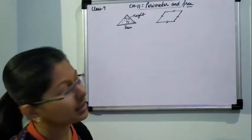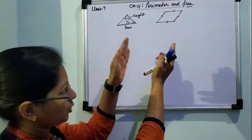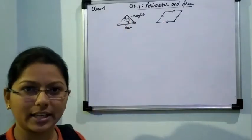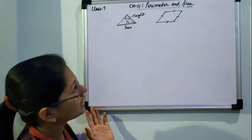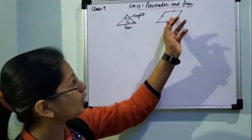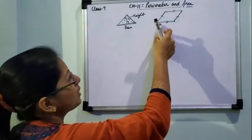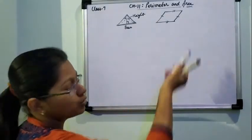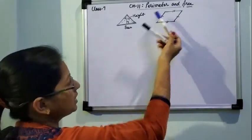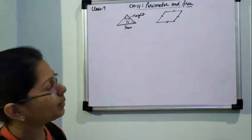Now for the perimeter of a parallelogram — if you tilt it straight, it will look like a rectangle. So the formula for perimeter of a rectangle can also be used for a parallelogram. We can take one pair as length and the other as breadth. So it is 2 into (length plus breadth), or simply length plus breadth plus length plus breadth. There is no problem in finding the perimeter.